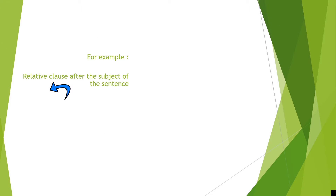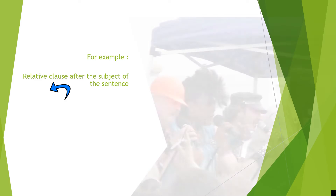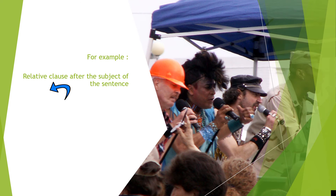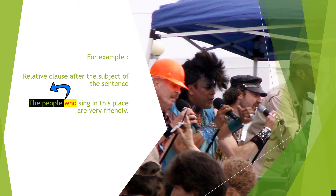Here is an example of a relative clause after the subject of the sentence. Have a look at this: 'The people who sing in this place are very friendly.' In this sentence, 'the people' is the subject, and 'who' is the relative pronoun referring to 'the people.' 'Who sing in this place are very friendly' is the relative clause.